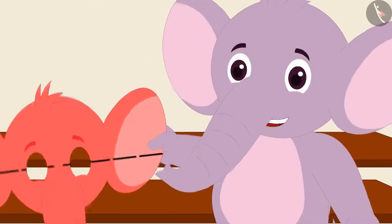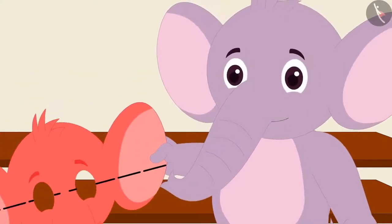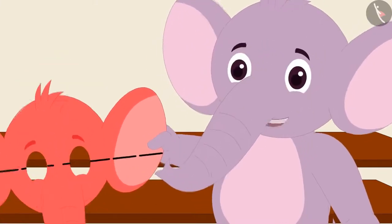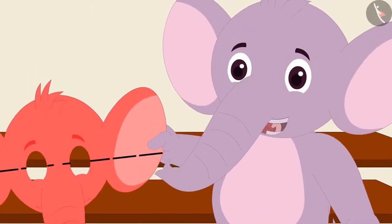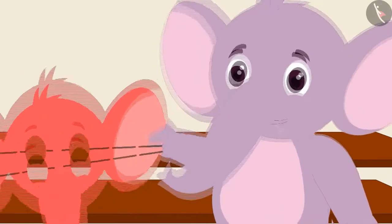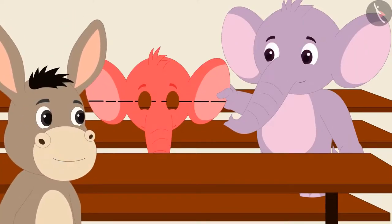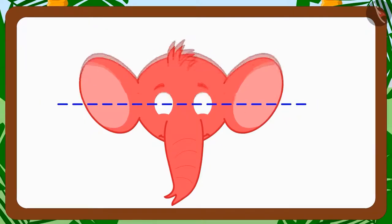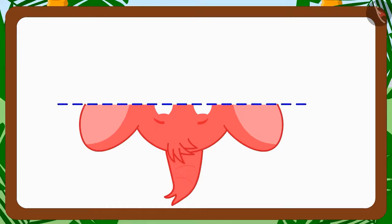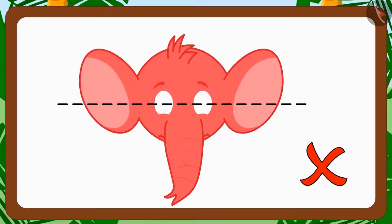Appu gets excited and says: 'Bholla, I have made a mask of my face on this sheet and I have also drawn a line. Can you tell me how will I know if this line is dividing my mask into two similar parts or not?' Bholla replies: 'This is very easy. If you want to know whether a dotted line can divide an image into two similar parts or not, just fold the image along the dotted line. If both parts coincide, then the line is dividing the image into two similar parts. This is the reason your line is not dividing your mask into two similar parts.'